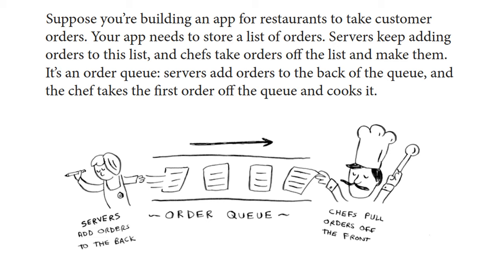Is an array more appropriate so that the chefs can pull the first order more efficiently, or is it more appropriate to use a list so that the servers can simply write orders very quickly at the end of the list? Remember, data structures rely on usage context — depending on the purpose of the algorithm or program, there are specific data structures more appropriate for those contexts. For this context, we have another data structure called the queue.